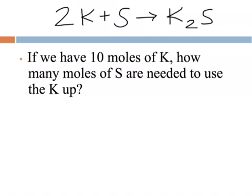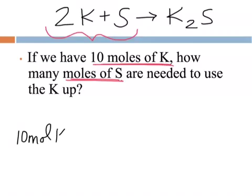Looking at another example here, it says if we have 10 moles of potassium, so that's what I have, how many moles of sulfur are needed to use the potassium up? So, in this example, we're using things that are both on the reactant side. Again, it doesn't matter which side of the equation you're on. So, I want to know how many moles of sulfur. That's my unknown. So, go ahead and start with what you know. 10 moles of potassium.